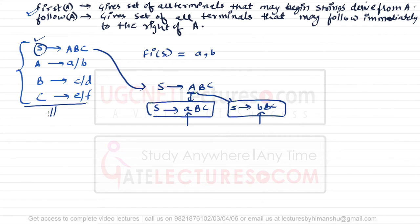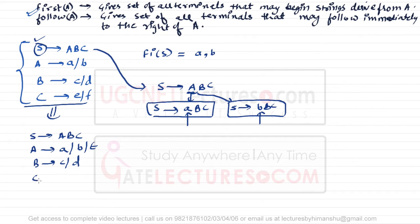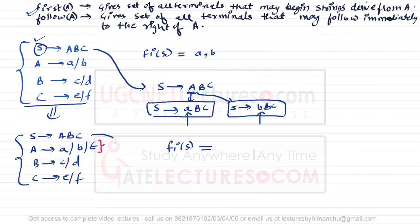Now, instead of the previous production, suppose we have S derives A B C, where A can derive small a, or small b, or epsilon — just adding epsilon to A's production. There is no change in B derives c or d, and C derives e or f. With this small change, what is FIRST of S?